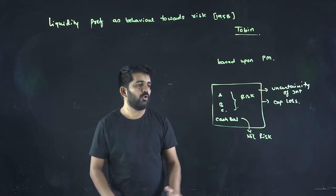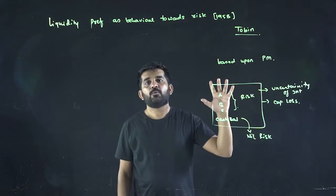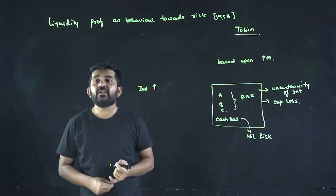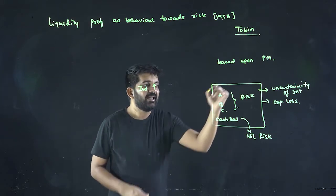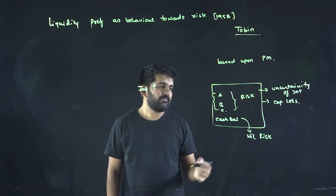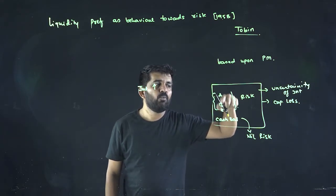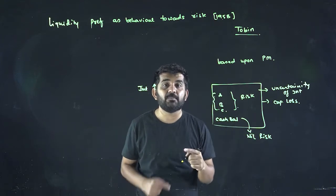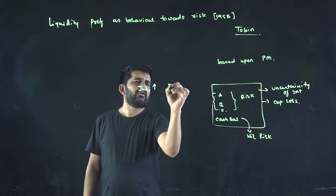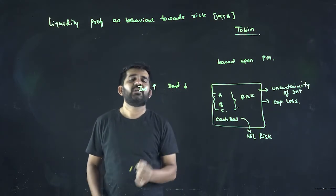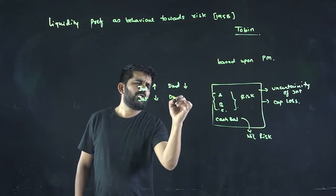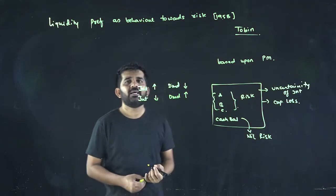Now, the same thing will come. If the interest is higher, tell me where you will keep more money. Suppose those are fixed deposits or bonds of some companies and the interest is higher - you will keep more in A, B, C and less in cash balance. Because if you keep more in cash balance, your opportunity cost increases. So if interest is higher, demand of money will be lower. Your cash balance demand will be lower. And if interest is lower, your demand will be higher.